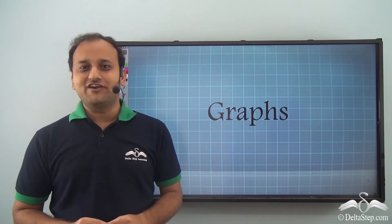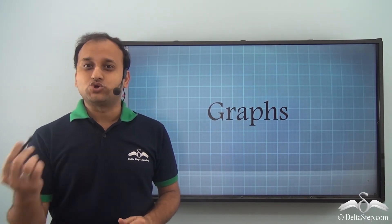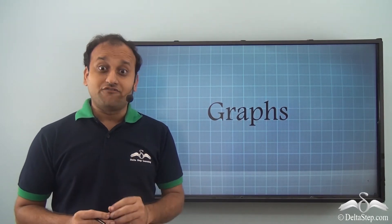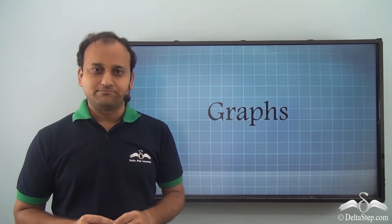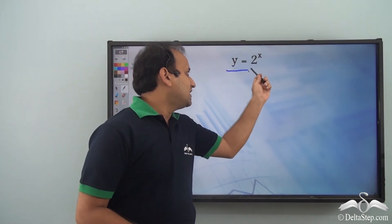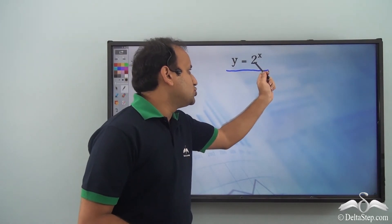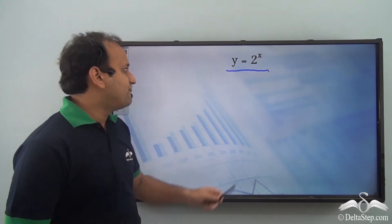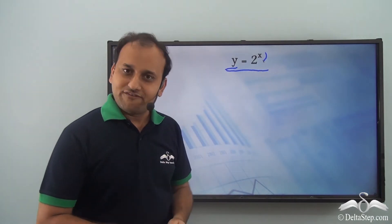Graphs are a very interesting way to know about many mathematical functions. They are just like drawings of mathematical functions. Let's see some graphs of exponents and logarithms — how they look and what exactly we can say about them. First, let's consider an exponential equation: y is equal to 2 to the power of x. We'll find some values of y for some values of x.